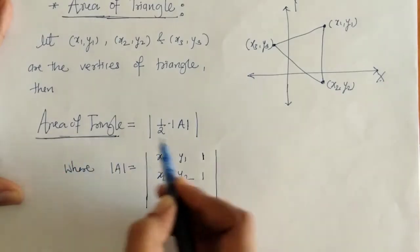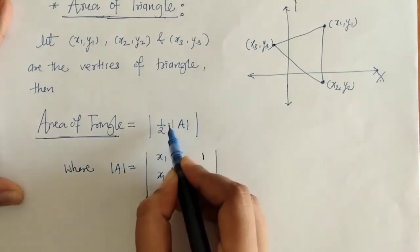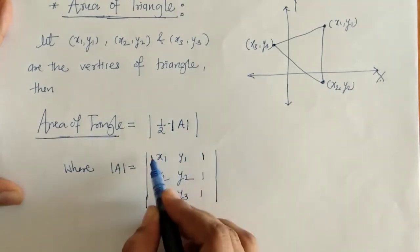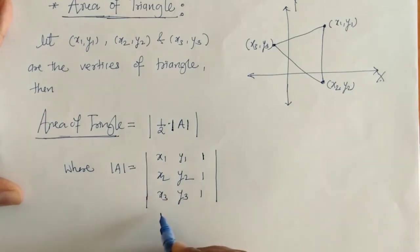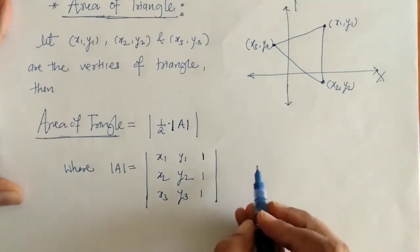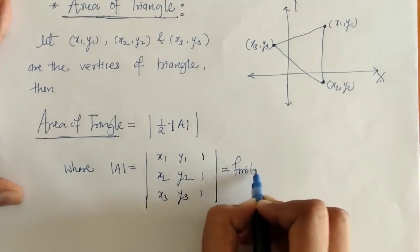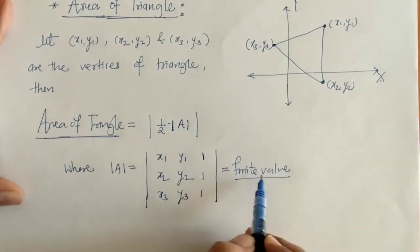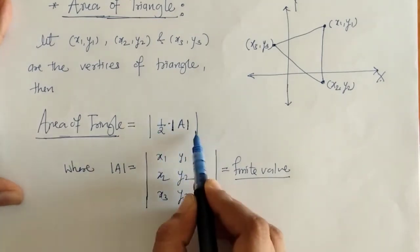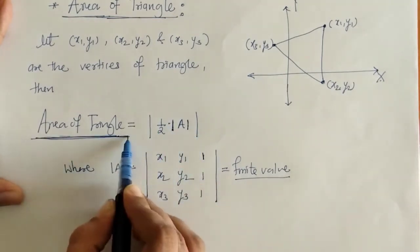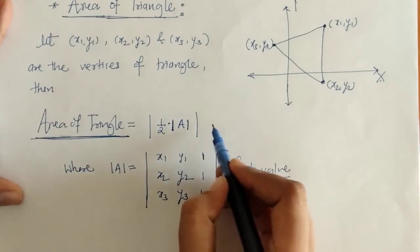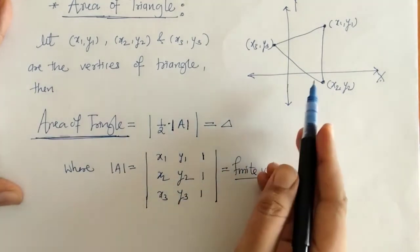The area of the triangle is given by this formula: mod of 1/2 into determinant of A. We can solve this determinant — it will give some finite value that may be positive or negative. We write that determinant value inside the mod since area is always positive, so we will get the required area of the given triangle.